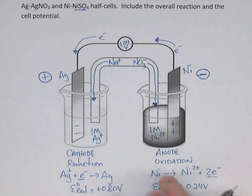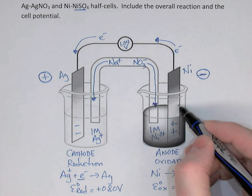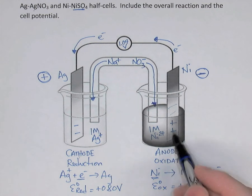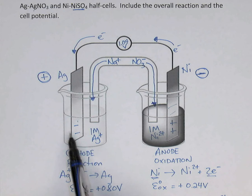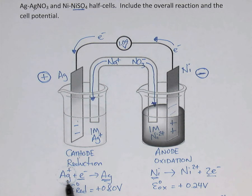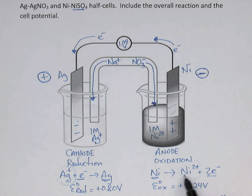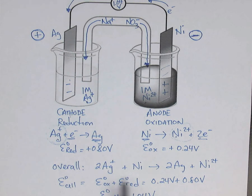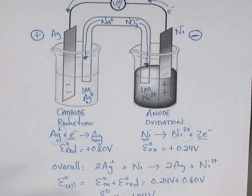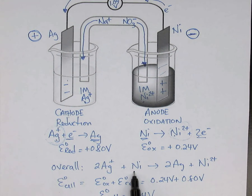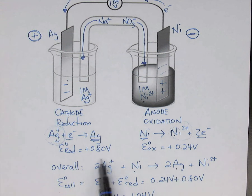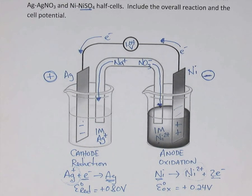Over time, the electrode where oxidation is happening — the nickel strip — will look like it's dissolving, and its mass will decrease. Meanwhile, the silver electrode's mass will increase because silver is precipitating on it. The silver ion concentration will decrease because Ag⁺ is a reactant, while the Ni²⁺ concentration will increase because it's a product. In general: if something in the overall reaction is a reactant, its concentration decreases over time; if it's a product, it increases. The nickel electrode gets smaller while the silver electrode gets larger.